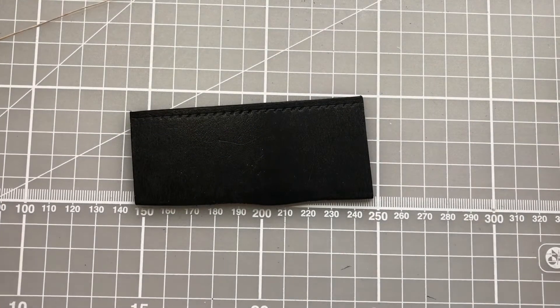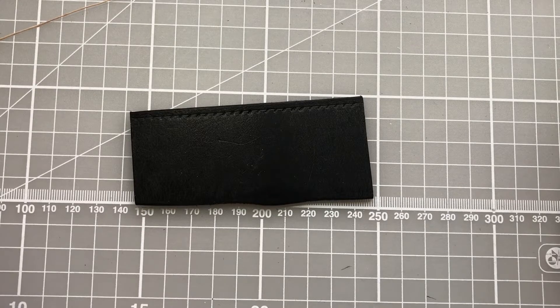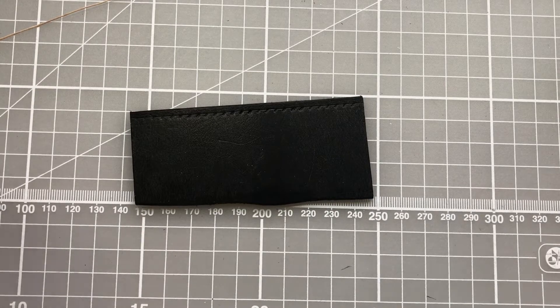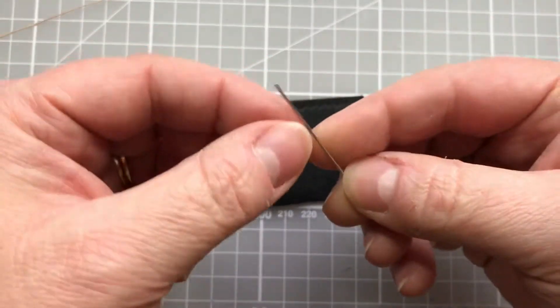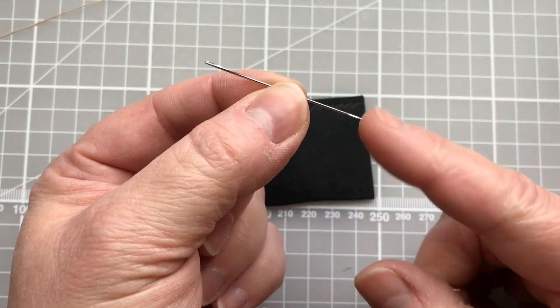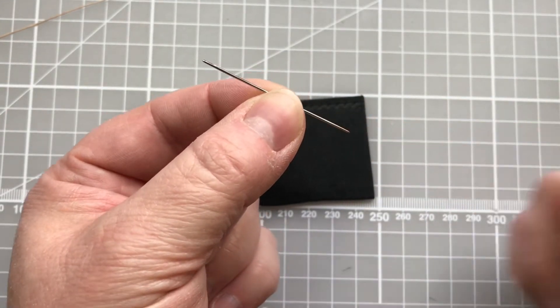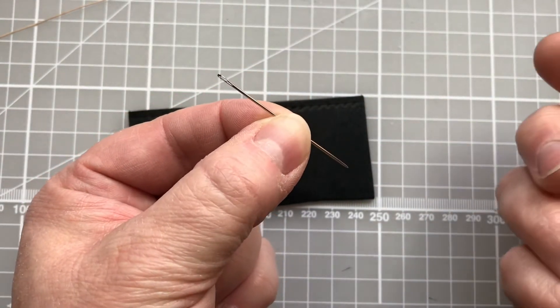The needles that we use are what we call Sadler's harness needles, so they're quite long and they have a slightly ballpoint tip, so they're not pointed like perhaps a regular sewing needle.